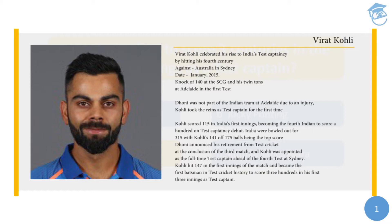For the first test of the Australian tour in December 2014, Dhoni was not part of the Indian team at Adelaide due to an injury, and Kohli took the reins as captain for the first time. Kohli scored 115 in India's first innings, becoming the fourth Indian to score a hundred on test captaincy debut. In their second innings, India was set a target of 364 on the fifth day. Kohli came in to bat when the innings were reduced to 57 for two and batted aggressively, putting on 185 runs for the third wicket with Murali Vijay before being dismissed, which triggered a batting collapse.